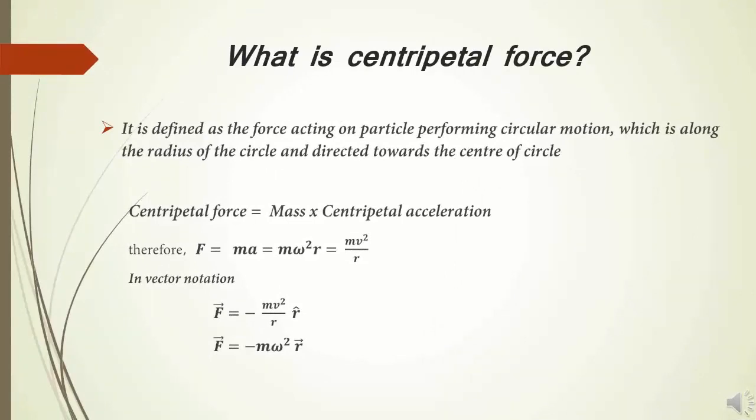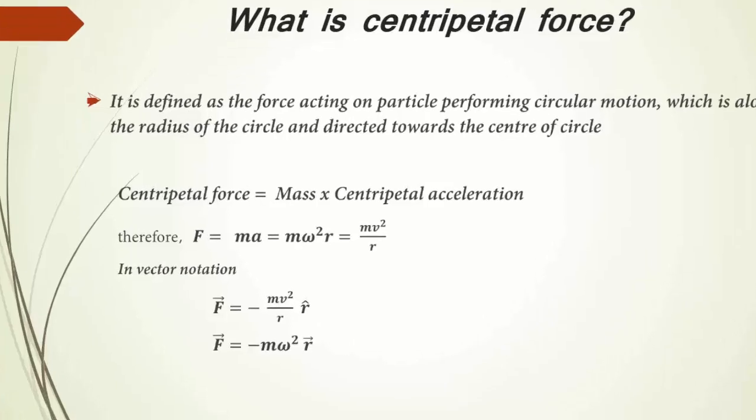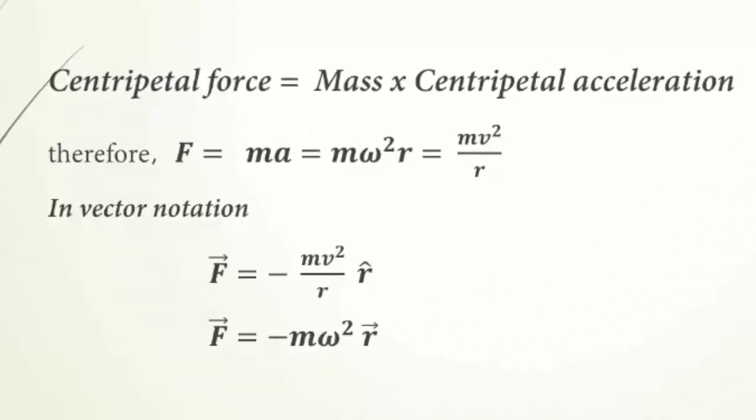Centripetal force is the force acting on the particle performing UCM. The direction of the force is along the radius and directed towards the center of the circle. The formula for centripetal force is M Omega square R or M V square upon R. In vector notations, it is equal to minus M Omega square R vector or minus M V square by R into R cap. So, it is very clear that the direction of centripetal force is always opposite to the radius vector.